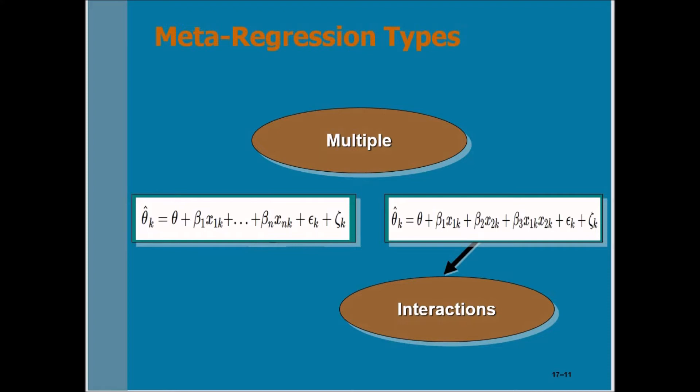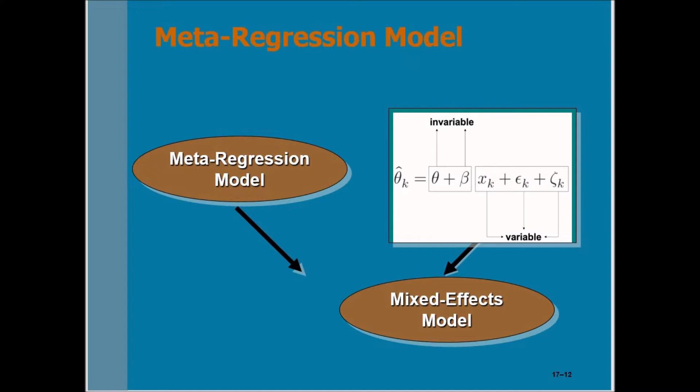It is very important to know that you can test interactions among variables in multiple meta-regression analysis. What is the meta-regression model? In this equation, theta plus beta are the invariable components in the regression equation, whereas x plus epsilon plus zeta are the variable components. The regression equation consists of the fixed part and the variable side. Therefore, this regression equation would be called a mixed-effect model. All meta-regression models are mixed-effect models.